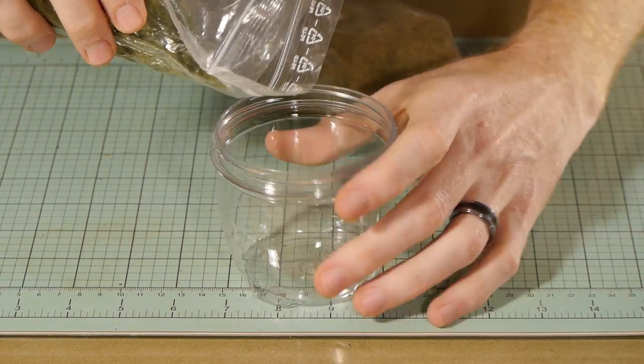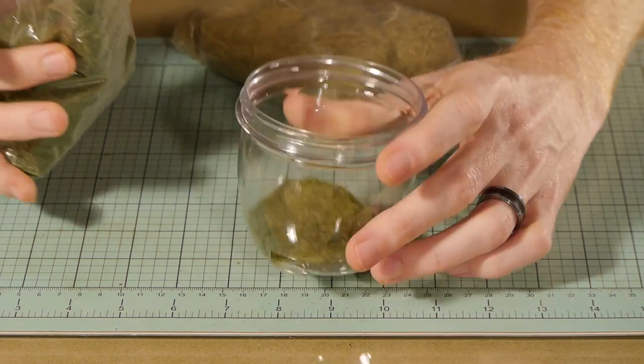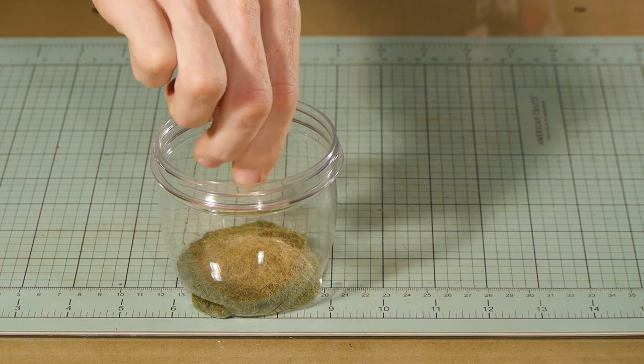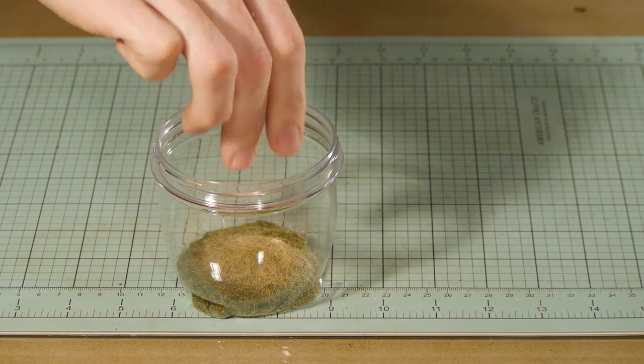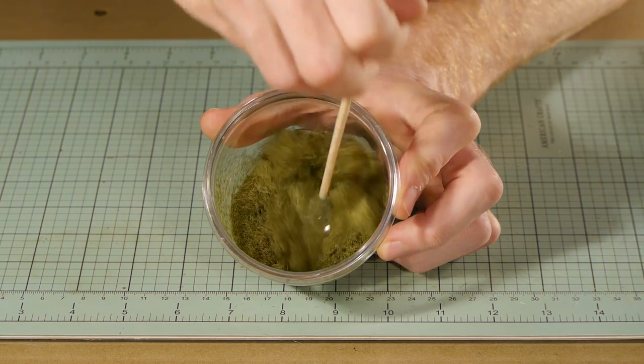I mixed the two together, it's a bit of a guessing game as to how much of each type. But after doing a few experiments I found using about 70% of the 6mm grass versus 30% of the shorter grass worked quite well. Just make sure they are well mixed so the fibers come out evenly when you start applying the grass.